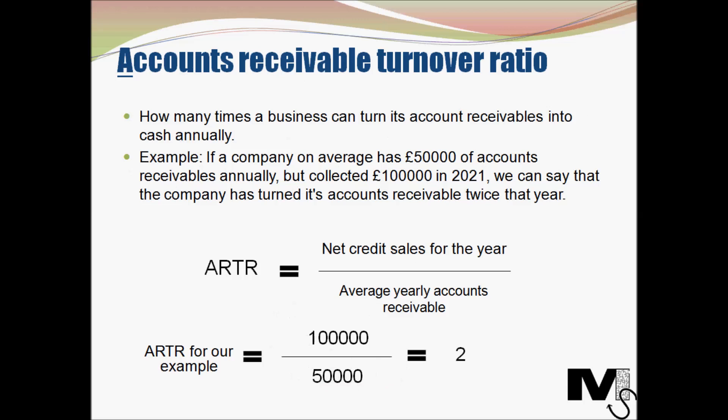The first type of efficiency ratio we're going to look at is the accounts receivable turnover ratio. This looks at how many times a business can turn its accounts receivables into cash annually. It is also called the debtors turnover ratio because it essentially looks at how well a company gets its debtors to pay.